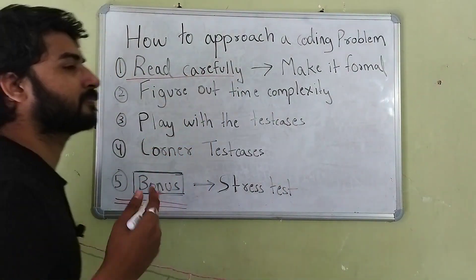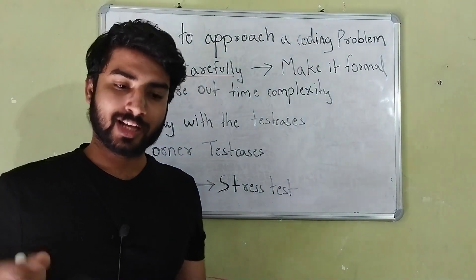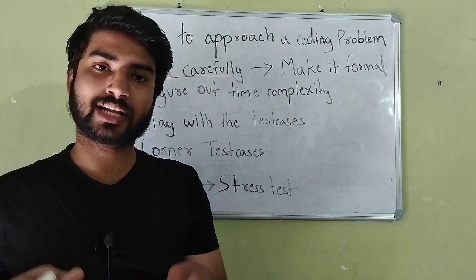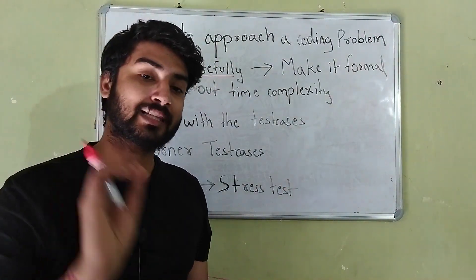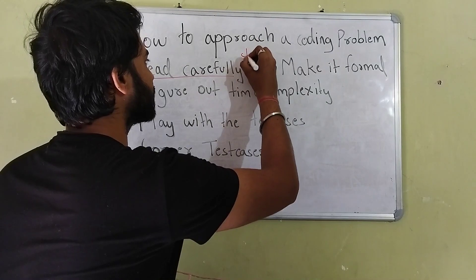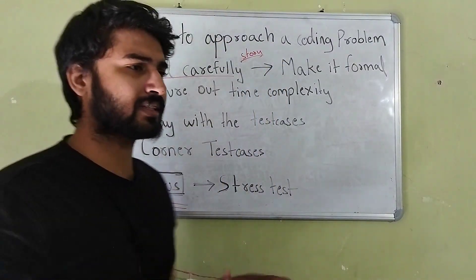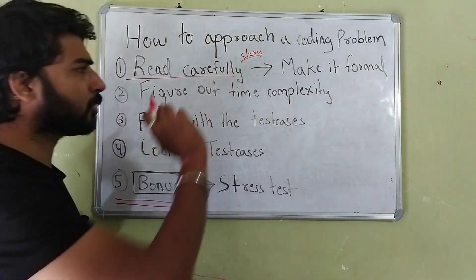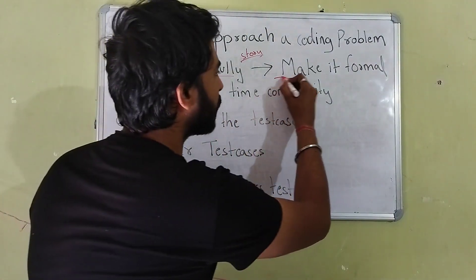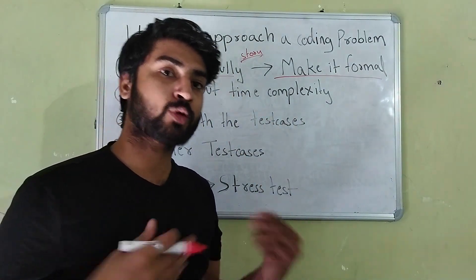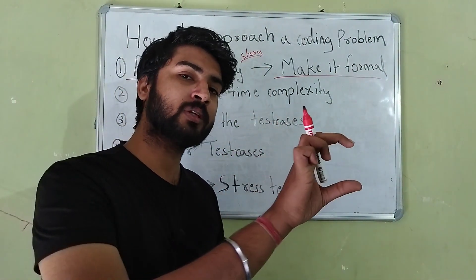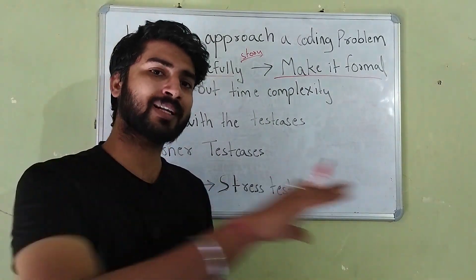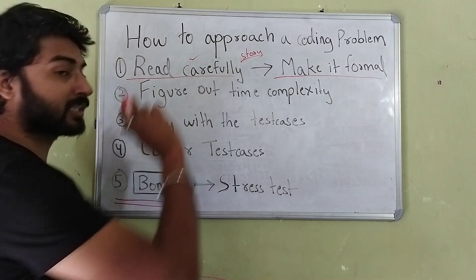The first step is read carefully. This is a no-brainer — everyone thinks that they read the problem carefully, but be honest: how many times has it happened that you read the problem, get to solving it, and later down the line realize you messed up something while reading? The major cause is the unnecessary story given in the problem that's there to distract you. So read the problem carefully and after reading it, make a formal statement in your head — forget the story and focus on what you actually need to do, like 'there's an array and I want to do this.'